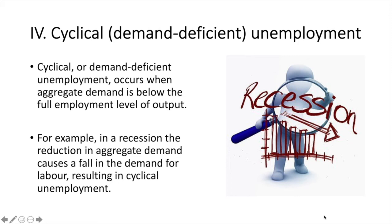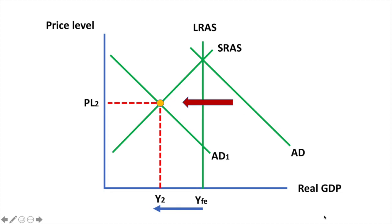Let's see what cyclical unemployment looks like on a diagram. Suppose the economy was initially in short-run and long-run equilibrium at YFE. If aggregate demand falls and actual output falls to Y2, this results in a negative output gap. The fall in aggregate demand for goods and services will then decrease the demand for labour resulting in cyclical unemployment.